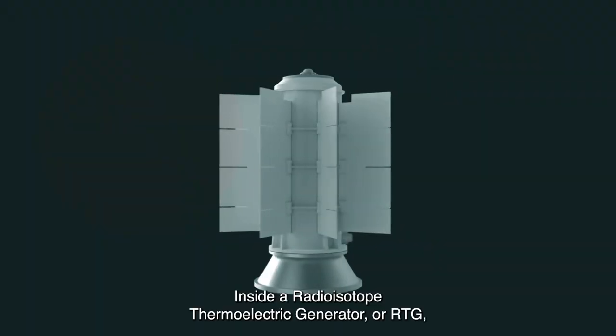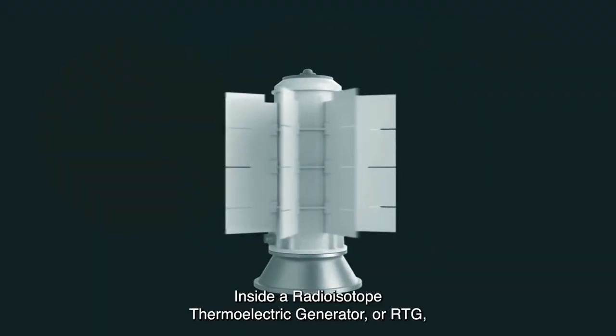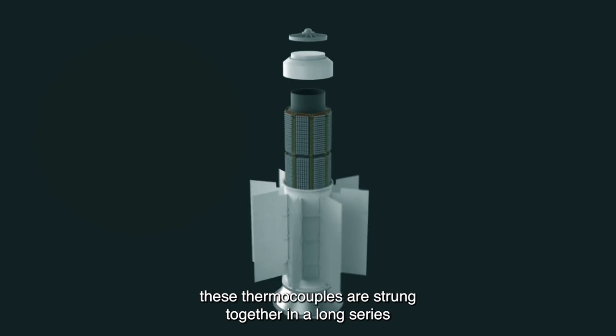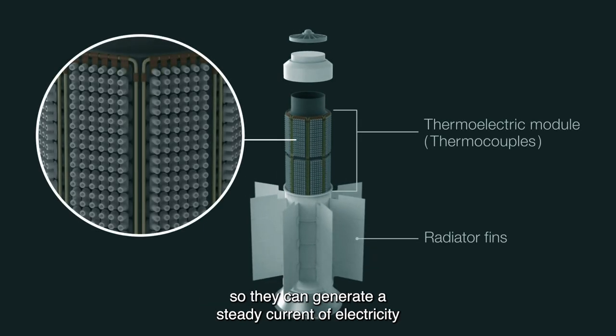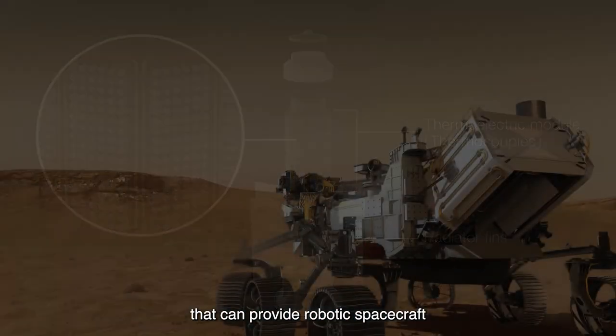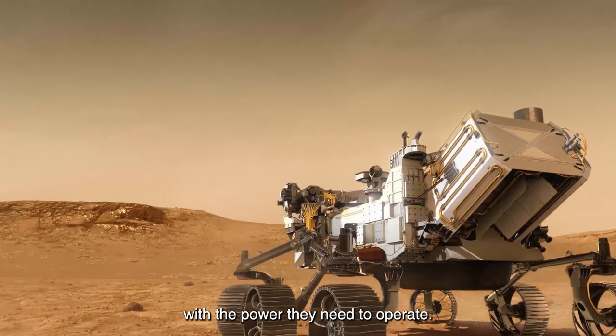Inside a radioisotope thermoelectric generator, or RTG, these thermocouples are strung together in a long series so they can generate a steady current of electricity that can provide robotic spacecraft with the power they need to operate.